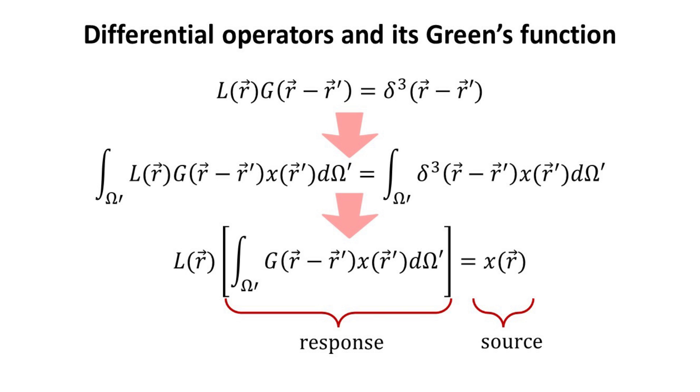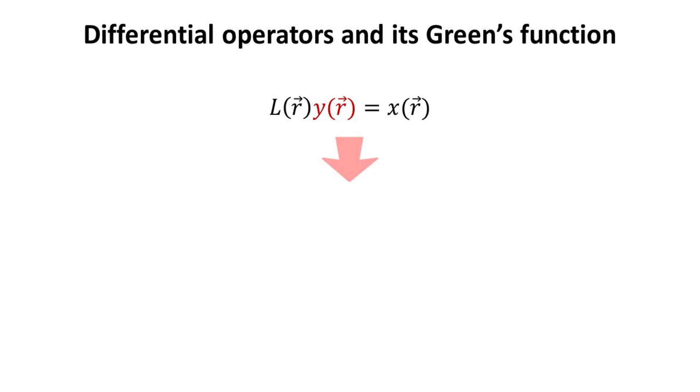Thus, the term in the square bracket is the response function to the applied source function X. We shall denote the response function as Y. In summary, the general response to a differential operator, herein denoted as Y, can be expressed as the convolution of the Green's function with the input function X, where the Green's function is being defined as such.